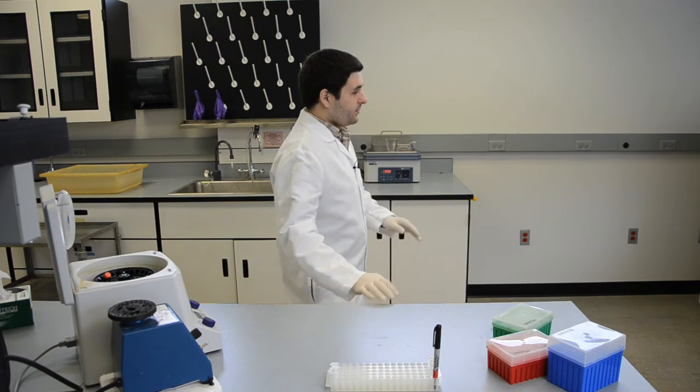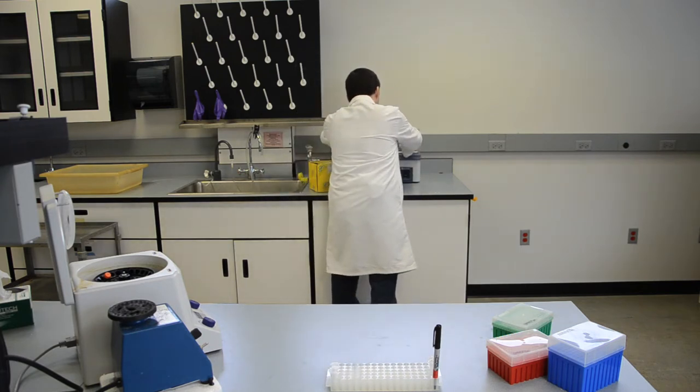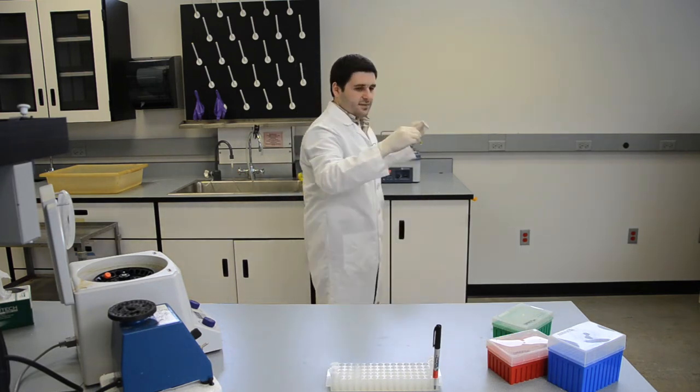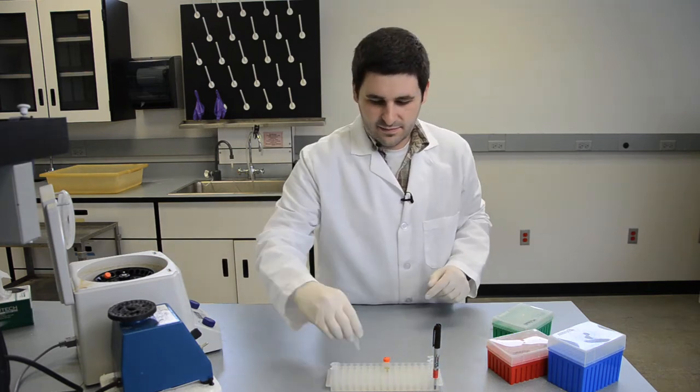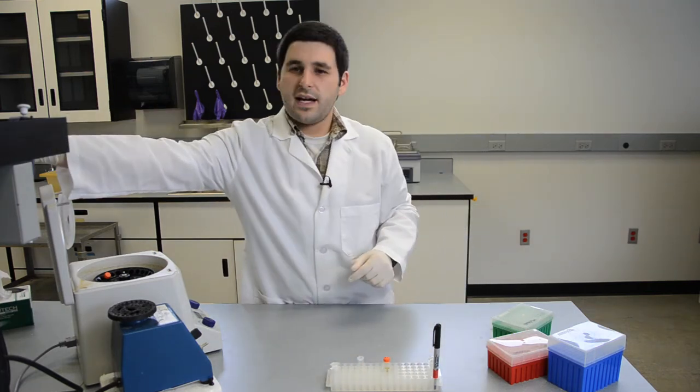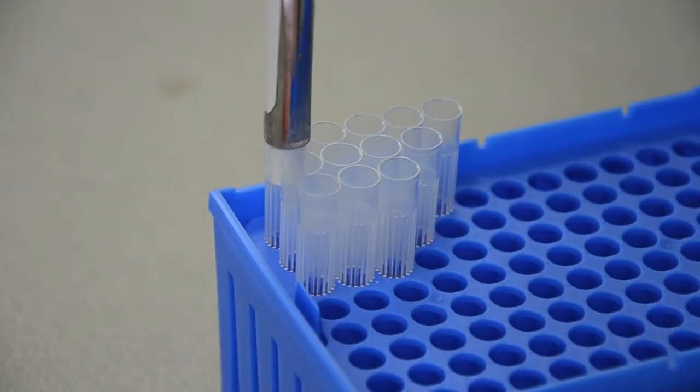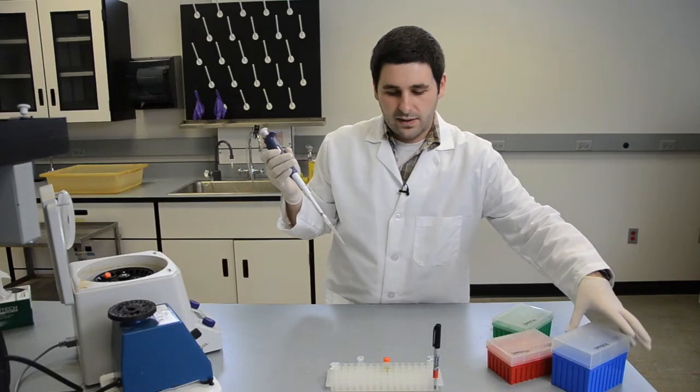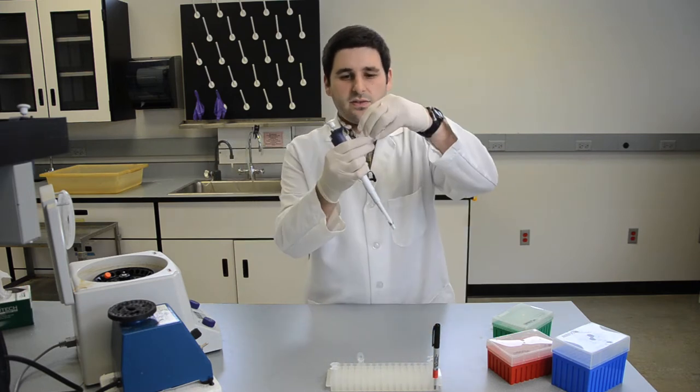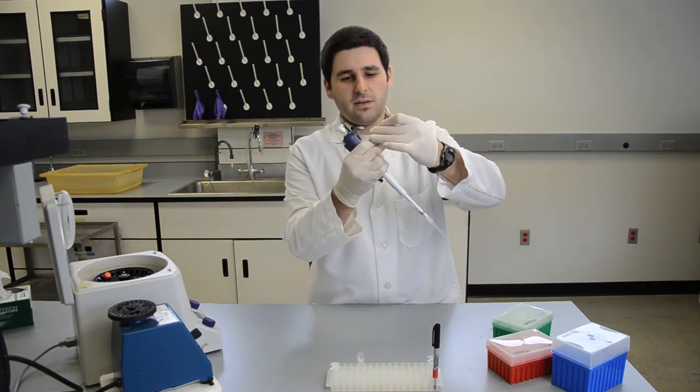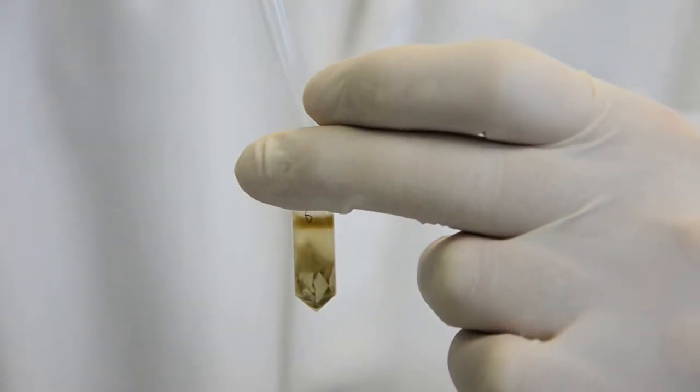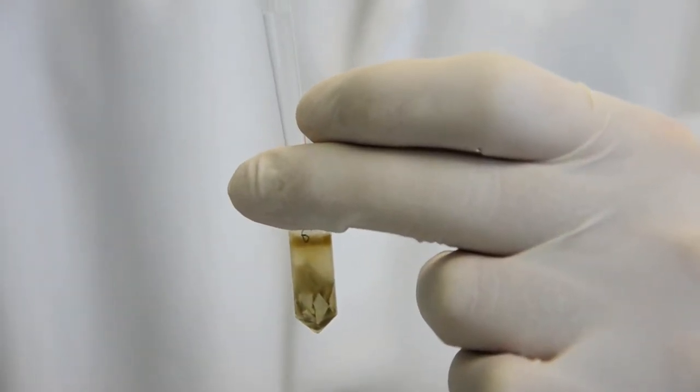It's been 10 minutes. Now we want to remove our two mil tube from 55 degrees Celsius and transfer the liquid inside to a brand new 1.5 mil Eppendorf tube. When we transfer it, we want to try and avoid transferring any of the filter. Just try to get in between all the cut up filters and grab all the liquid that you can.